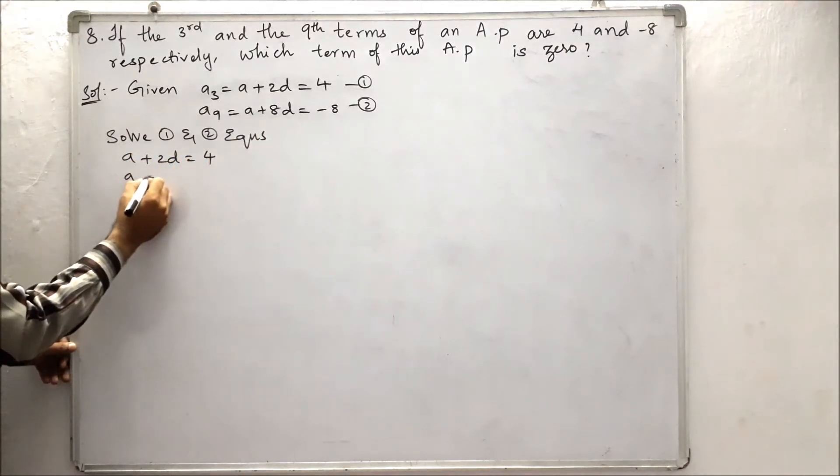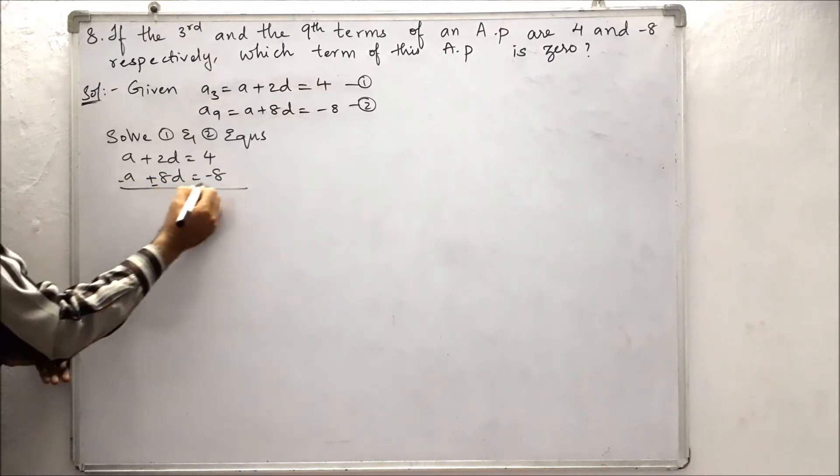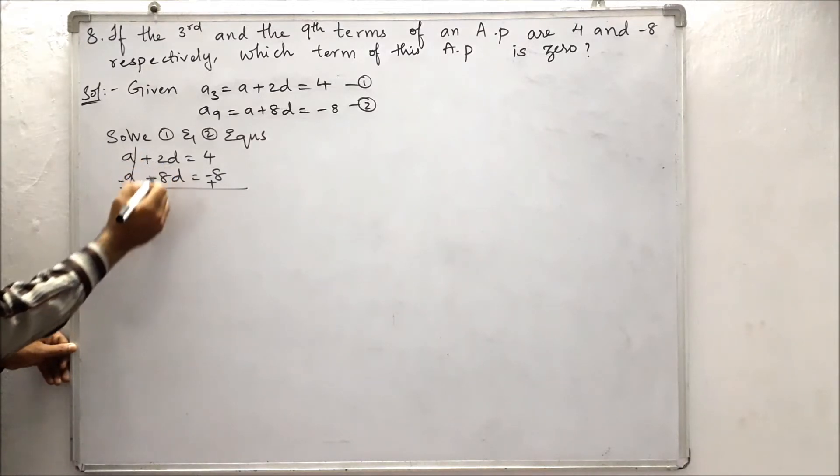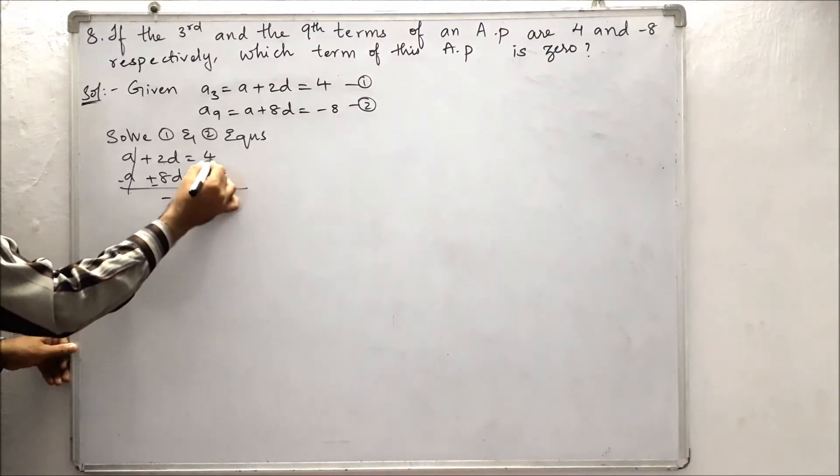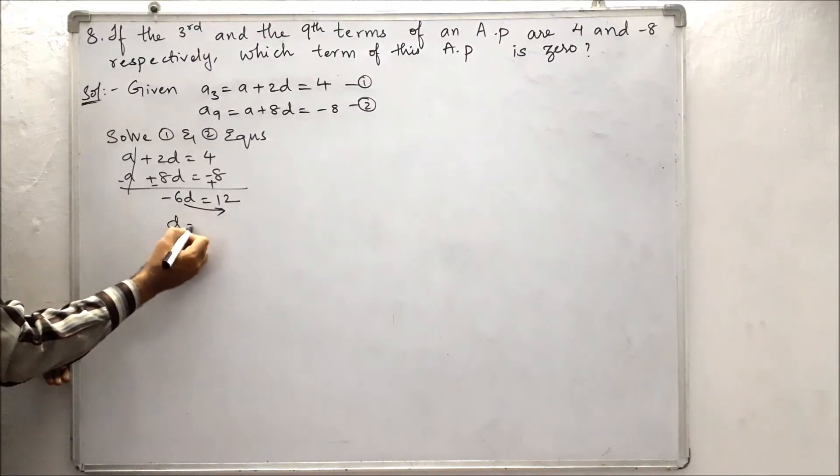Minus minus plus, change the signs, then cancel. Minus 8d plus 2d, that is minus 6d. Minus 8 plus 4 is minus 12. Send this 6 to the denominator, we get minus 12 by minus 6.